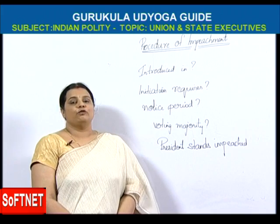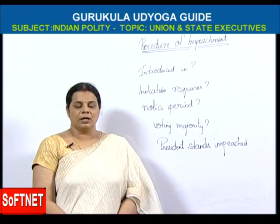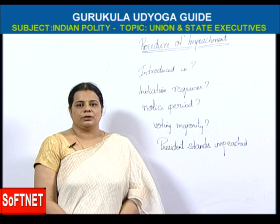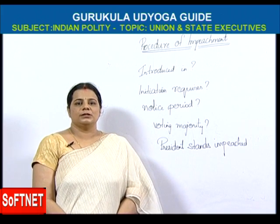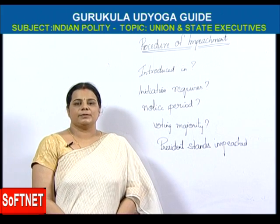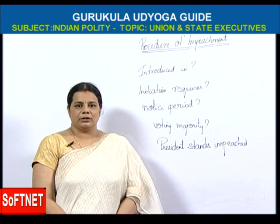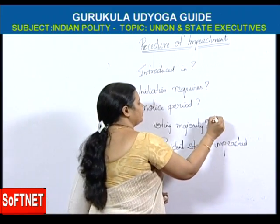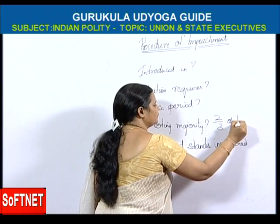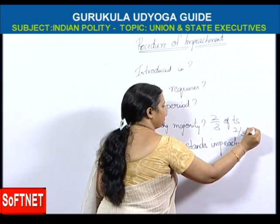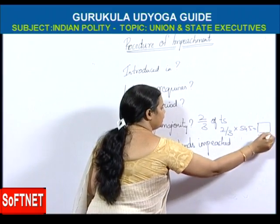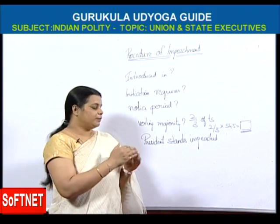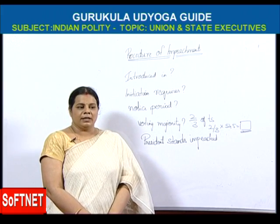The majority required to remove the President of India is called absolute majority — two-thirds of the total strength of the house. Irrespective of how many people are voting or absent, the majority required is two-thirds of the total strength. If it is Lok Sabha, two-thirds of 545 must approve the resolution. Only if approved by this majority will the President be removed.